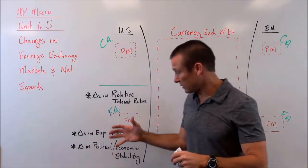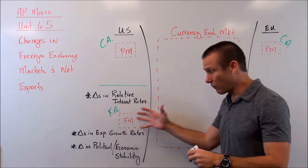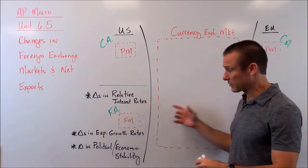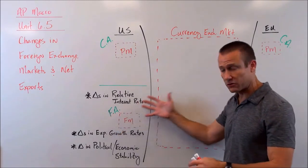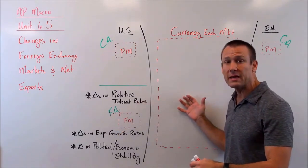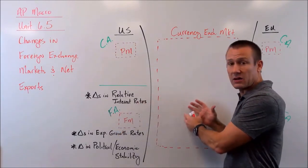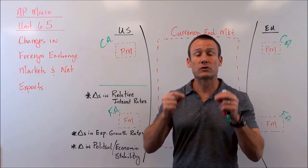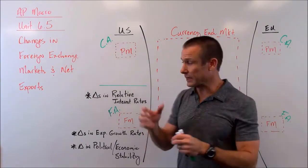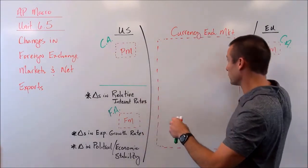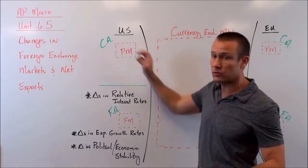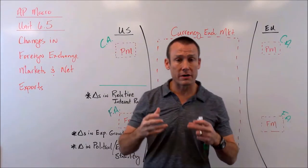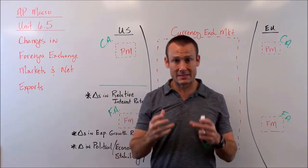Our international purchasing power is declining, so we buy less from abroad and US imports go down. In this situation, the outflow of money from the financial account causes the dollar to depreciate, which causes net exports to increase - it causes money to flow in from the current account standpoint.